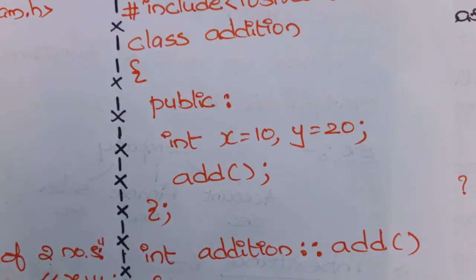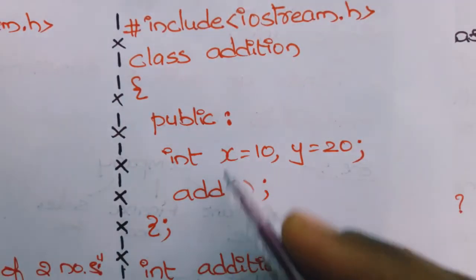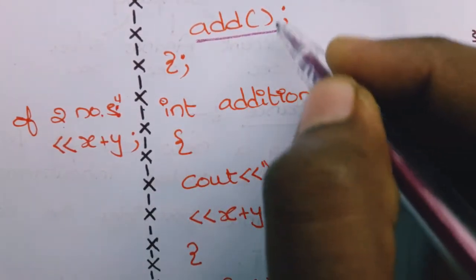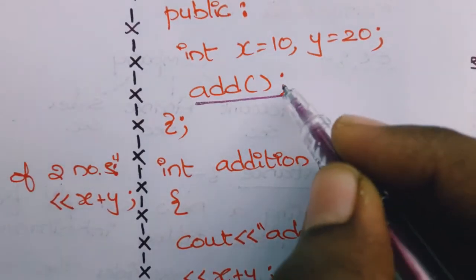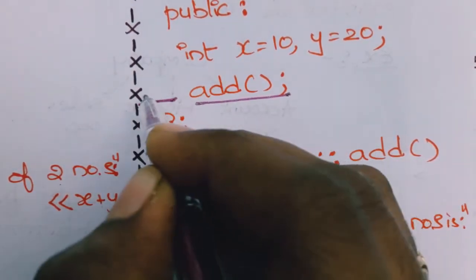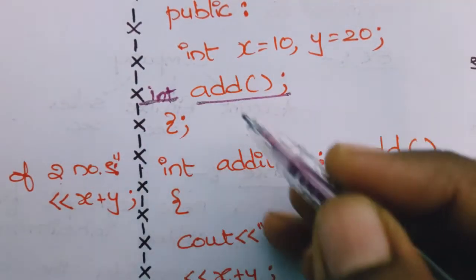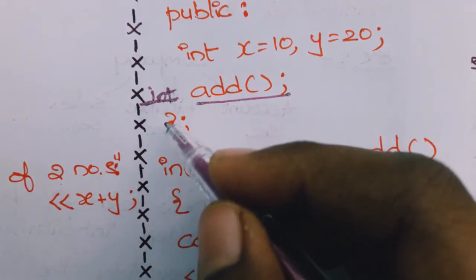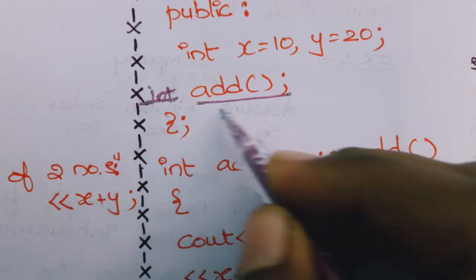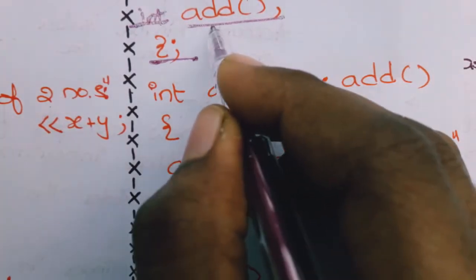This is one way to write it — another way I will now explain. You use the same header files, then the class name. Directly under public, declare variables with values and the function name. The function body is not written inside the class, so you close the function declaration with a semicolon. Here: int x = 10, y = 20, and int add — then the class is closed.